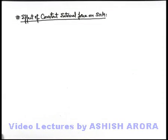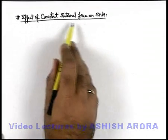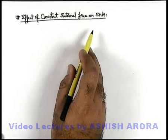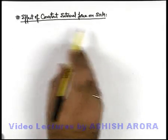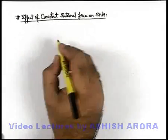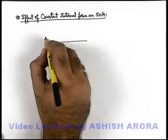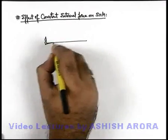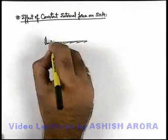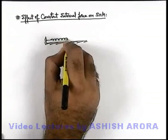In this section, we'll discuss the effect of a constant external force on a simple harmonic motion. To understand the concept, let us take an illustration. Say we are given with a spring-block system placed on a smooth horizontal surface.